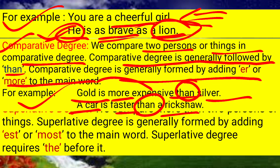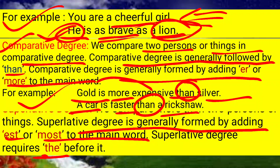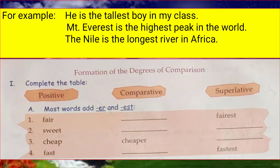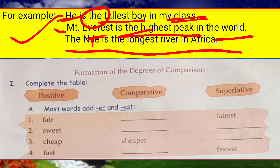Superlative degree is used when we are making a comparison among all things. It is generally formed by adding -est or 'most' to the main word, and it requires 'the.' For example: 'He is the tallest boy in the class.' 'Mount Everest is the highest peak in the world.' 'The Nile is the longest river in Africa.'